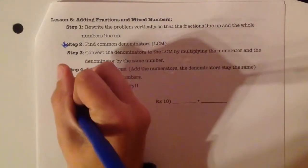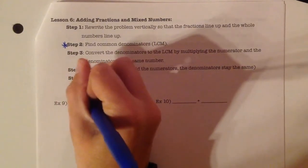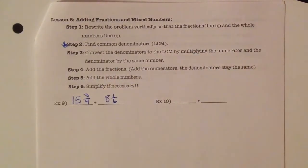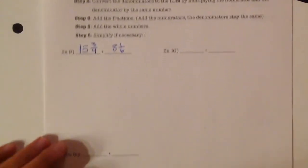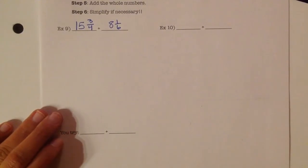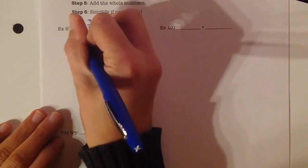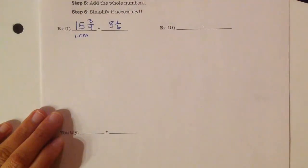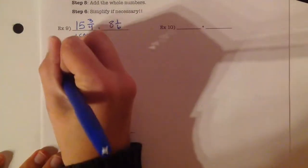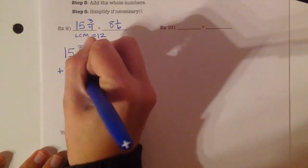First example: 15 and 3 fourths plus 8 and 1 sixth. The first step is to find that least common multiple, that least common denominator. 4 and 6, you realize that the smallest number that they both multiply into is 12. I've got my problem that I'm rewriting vertically to start off with. I've got 15 and 3 fourths plus 8 and 1 sixth.